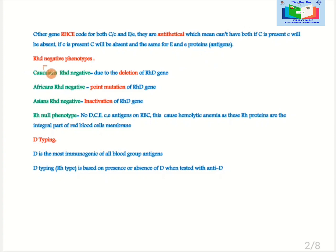RHD negative phenotypes: In Caucasian population the RHD is negative due to the deletion of the RHD gene. In African population the RHD phenotype is due to the point mutation of the RHD gene. In Asian the RHD is negative due to the inactivation of the RHD gene.